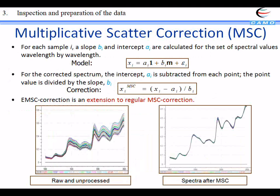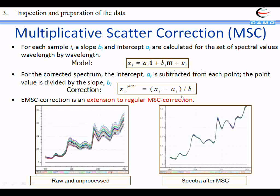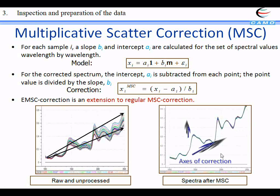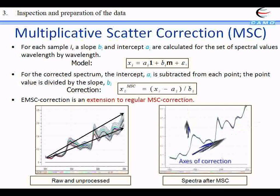Then we have more complex correction. Here is an example of multiplicative scatter correction, MSC. We will correct each spectrum by finding two coefficients: the slope and the intercept for every spectrum. Each spectrum will be corrected by its own coefficients using the regression equation shown here. Here you can detect some scatter effect — you see it is much broader at the end of the spectrum. After MSC, we have corrected both for baseline and the slope or scatter effect.